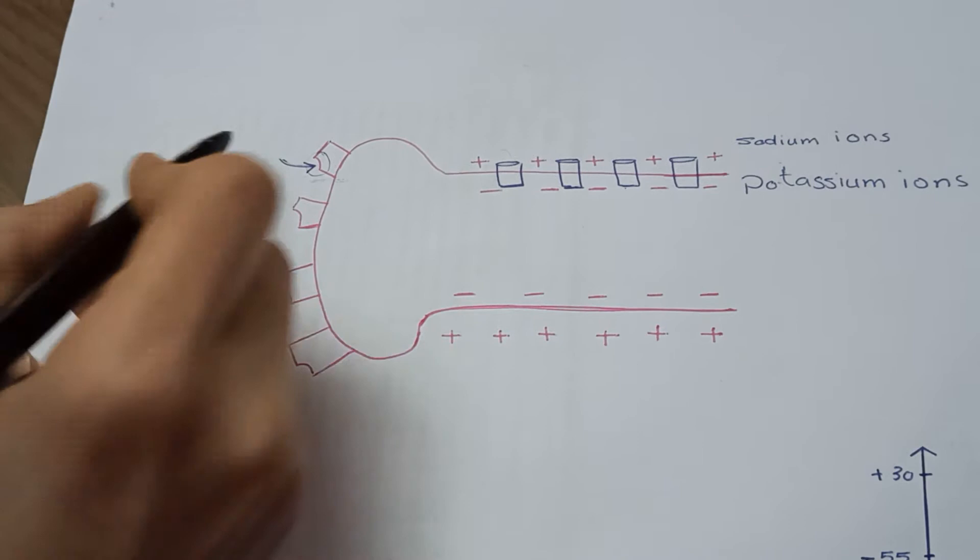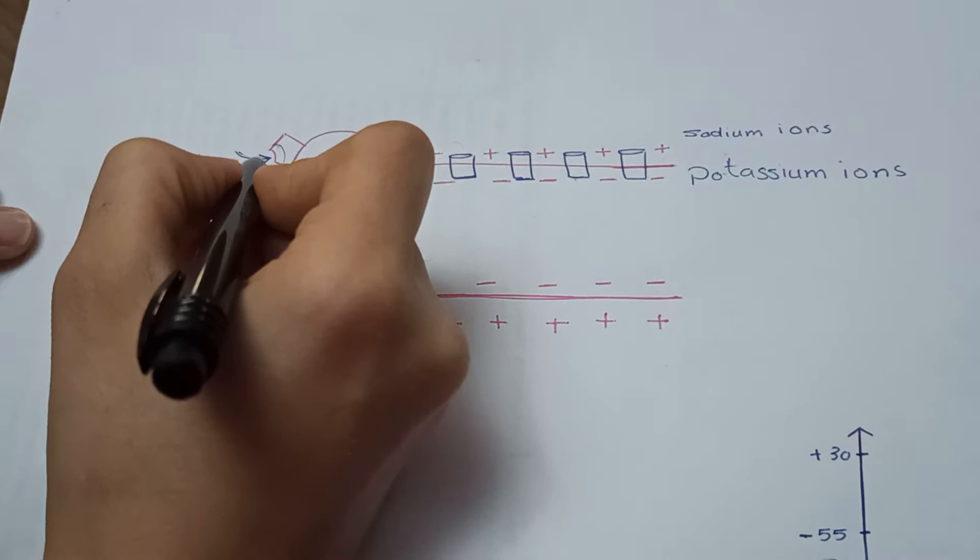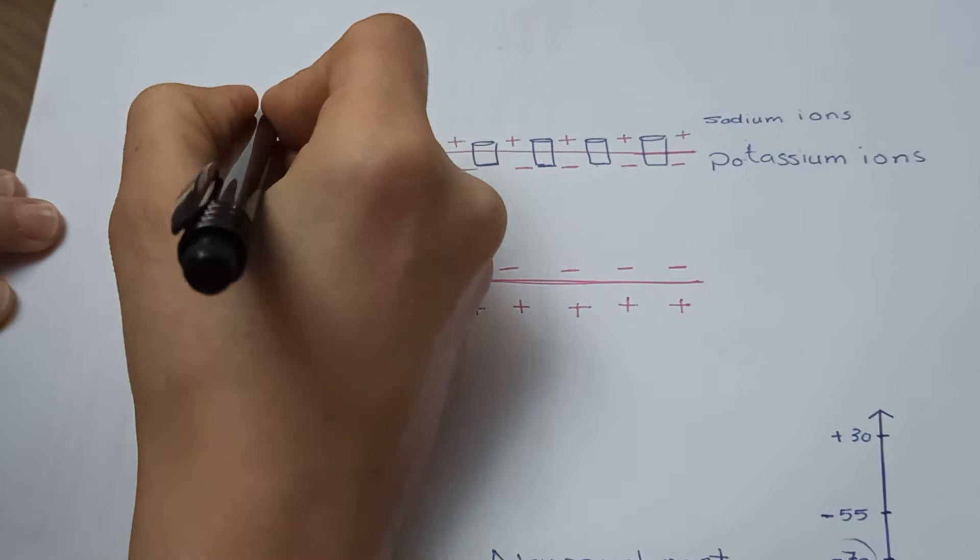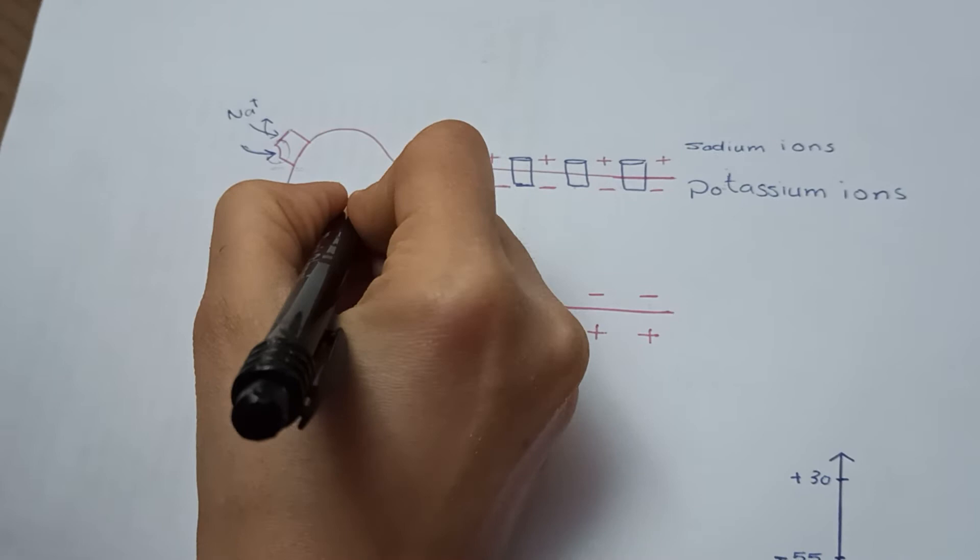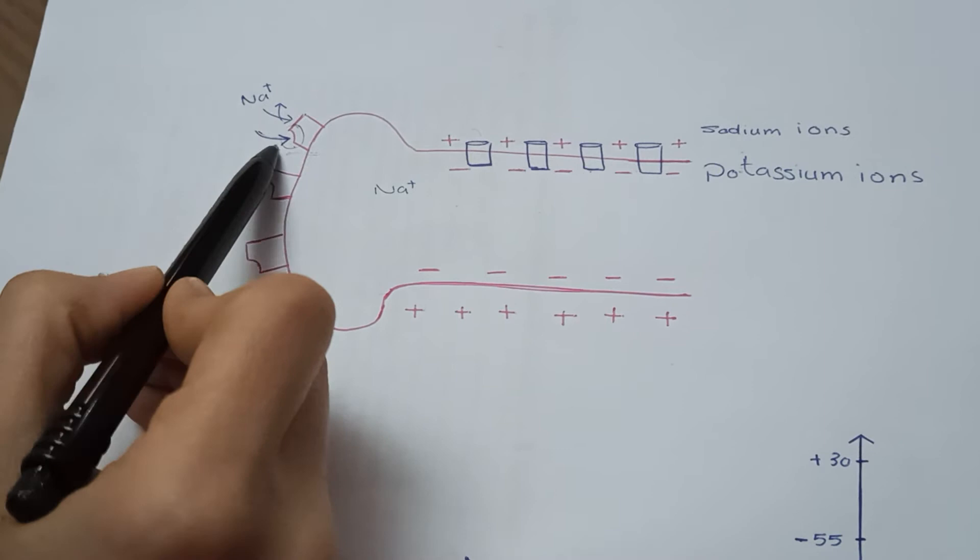When the neurotransmitter attaches to the specific receptor, this channel opens and allows sodium ions to enter. As the sodium ions enter inside the cell, it increases the positive charge.